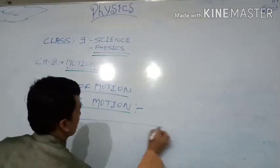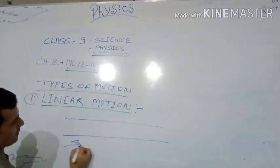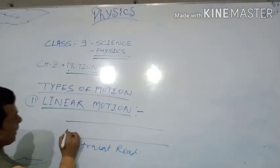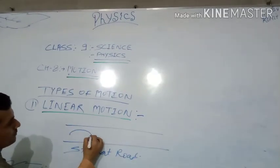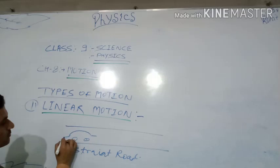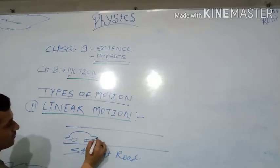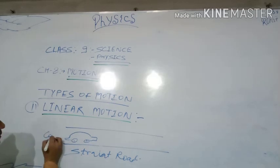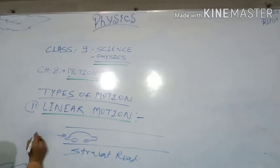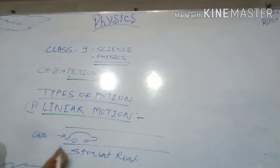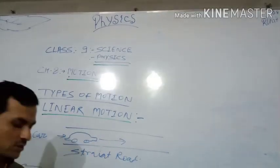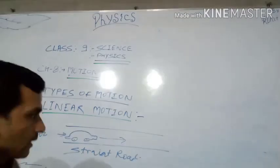Let me draw on the board here. This is a road — a straight road. And here is a car. The car moves in the forward direction on the straight road. So this is the example of linear motion.